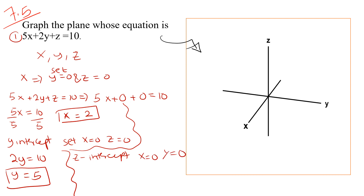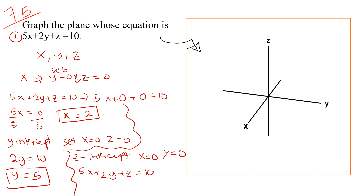Now finding the z-intercept: we set x equals to 0 and y equals to 0. Setting both to zero in the equation, we only have z equals to 10. So the z-intercept is 10.